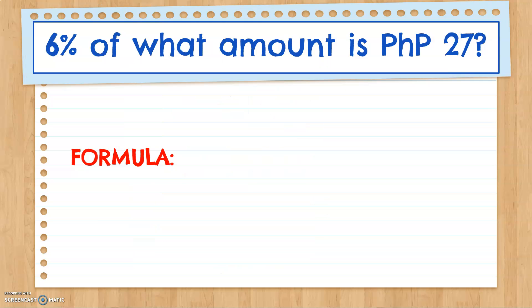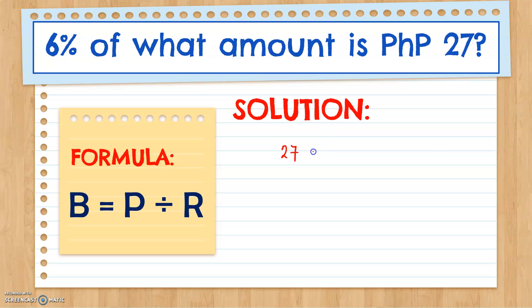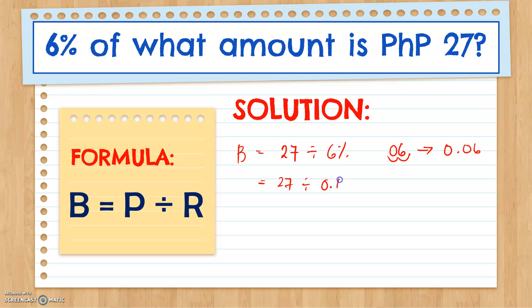6% of what number or what amount is 27 pesos? In this question, we are asked to look for the base. Using the formula Base equals Percentage divided by Rate, we have 27 pesos divided by 6%. Let's change 6% into a decimal by moving the decimal point twice to the left. So 6% equals 0.06. Then we divide 27 by 0.06.